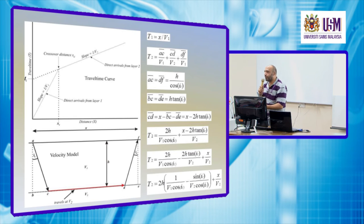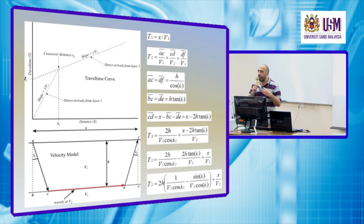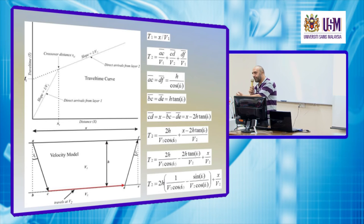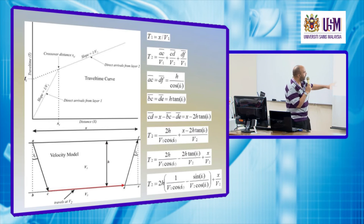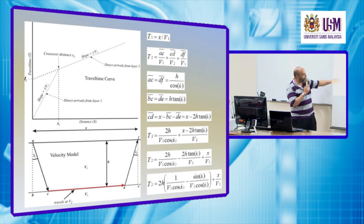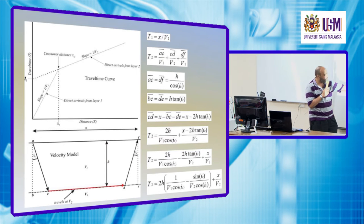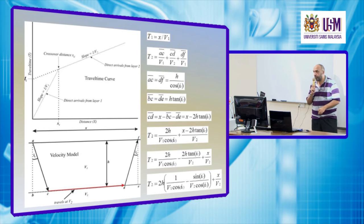We want to determine the travel time for refracted energy. In order to determine the time we need the length of the path and the velocity. The path length is from A to C, from C to D, and from D to F. Due to the horizontal interface, both AC and DF are equal.